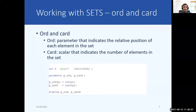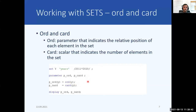Let's look at an example. We have the set y for the years 2011 to 2020, and we declare two parameters, p_ord and p_card, to see how the ord and card operators function. To p_ord we assign the ord operator of the y set, which means for each set element a value indicating its relative position in the set will be assigned — that is, for 2011 the value 1, for 2012 the value 2, for 2013 the value 3, and so on. In the case of the card operator, the number of total elements in the set will be assigned to p_card, which is 10 in this case.